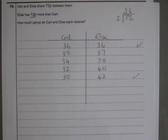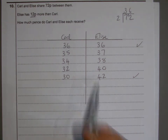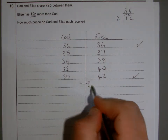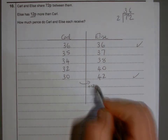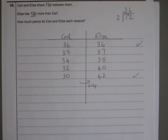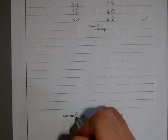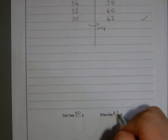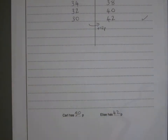The gap is now 12 pence, it adds up to 72, and that's exactly what we want. So Carl has got 30 pence and Elise has got 42 pence.